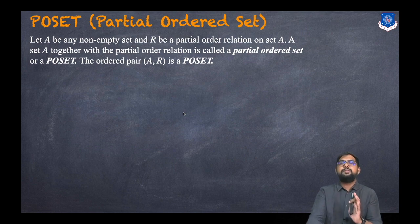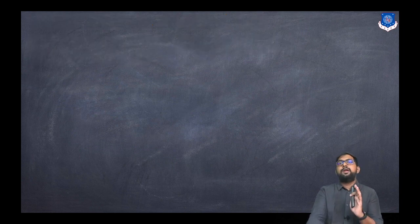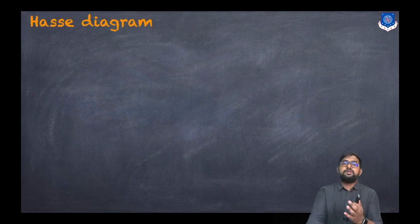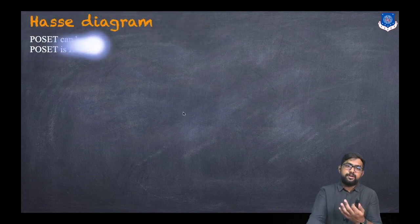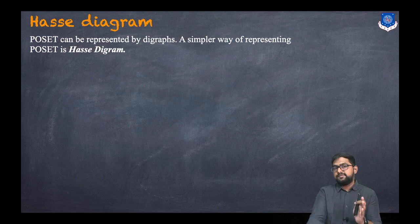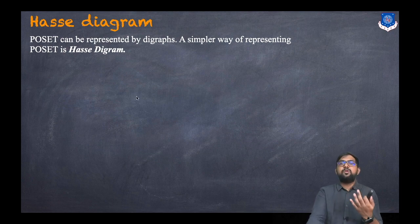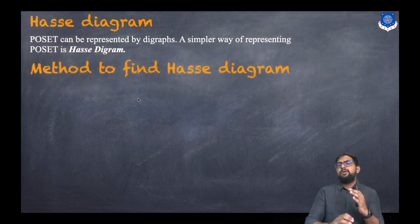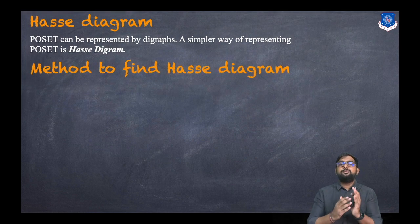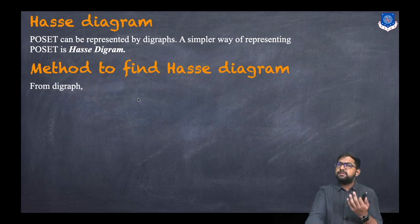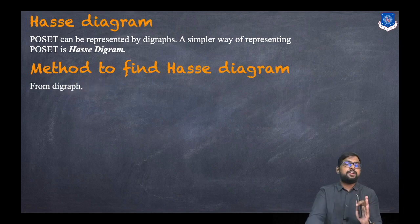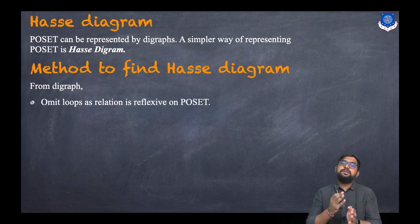The ordered pair (A, R) is called a poset. To represent a poset we will need a Hasse diagram. A poset can be represented by digraphs, but a simpler way of representing a poset is called a Hasse diagram. Now let us discuss the method to find a Hasse diagram. There are a few steps — the first step is to construct a digraph.